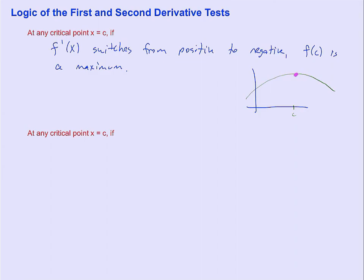The derivative of f is positive, meaning f is increasing before x equals c, and negative after x equals c, which means f prime of x switches from positive to negative so f(c) must be a maximum.